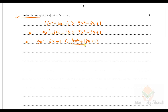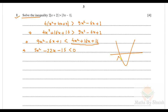Transferring everything to the left-hand side we get 5x²−22x−15 less than 0. Now we only need to solve this quadratic inequality. We need to find the roots; we know this is going to be cup-shaped, and since it is less than 0, we need x between the two roots.